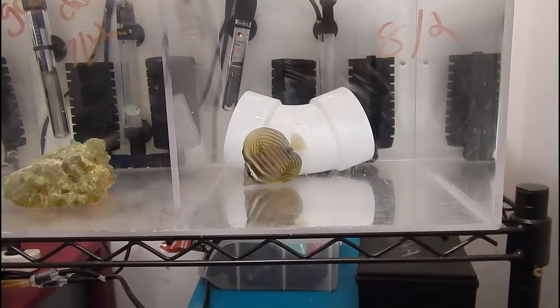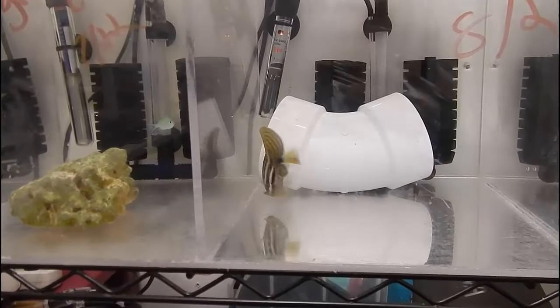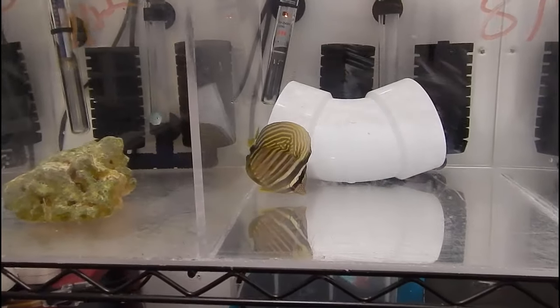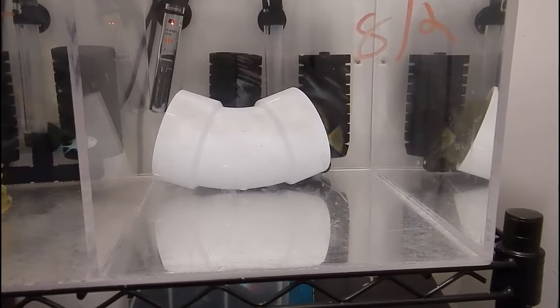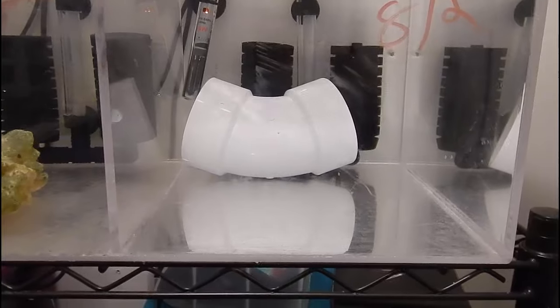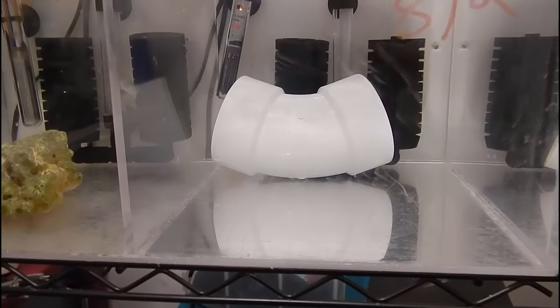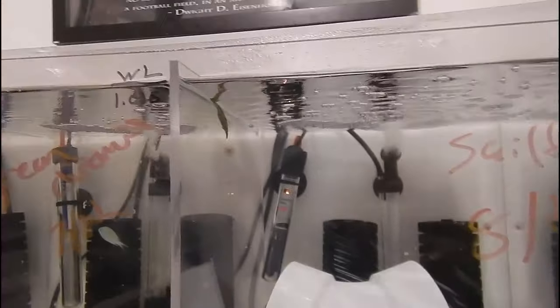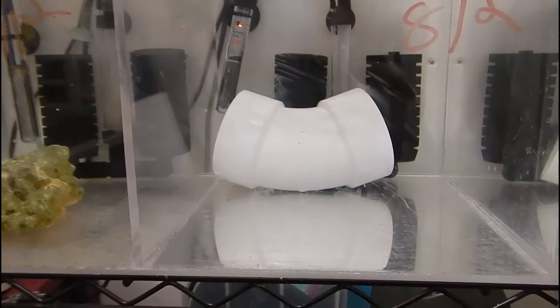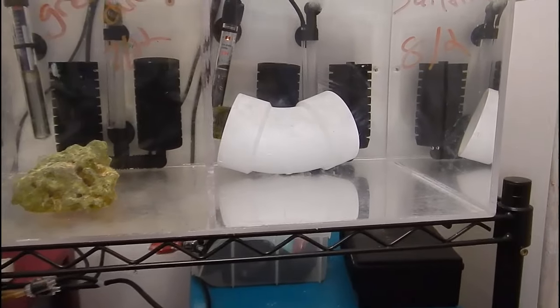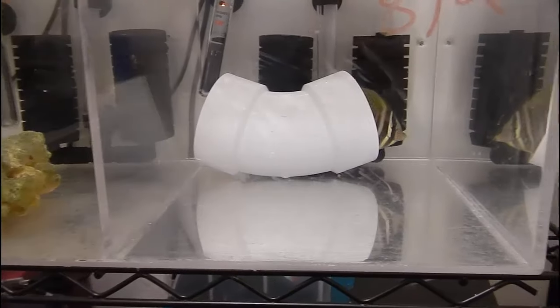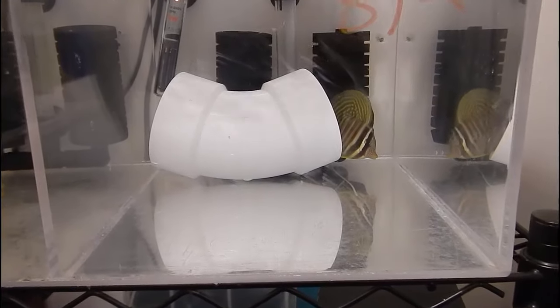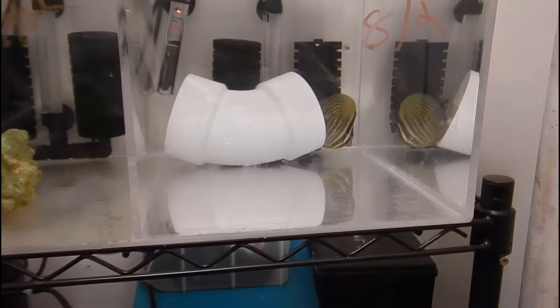He's hiding in his PVC. It's a sailfin tang, a little different version than the original sailfin that I had, but he looks pretty cool. He's about three and a half to four inches, and he did pretty well during shipping. He just ate my shrimp, and I have a piece of nori up here he's been chewing on. He did really well so far, and I really hope everything goes well during the quarantine period because these type of fish have a special place in my heart.